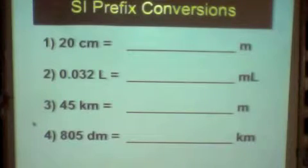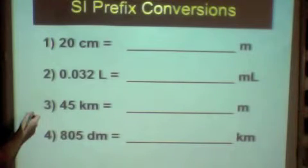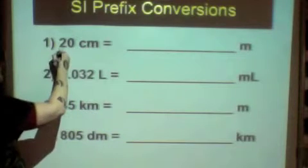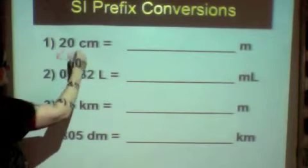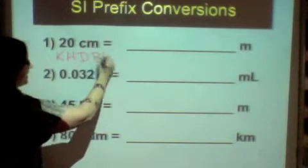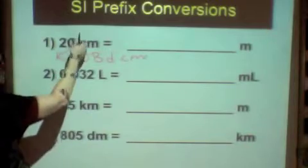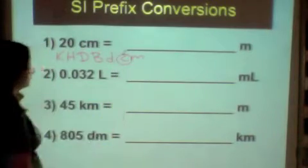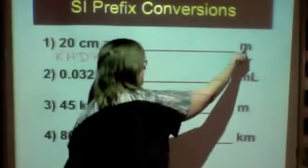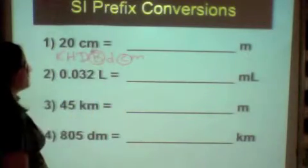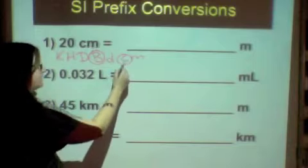Okay? So, we're going to do the first two together and then I'm going to pause the video and do three and four. So, for instance, the first one, we're starting with centimeters. So, King Henry died by drinking chocolate milk. We're starting at the C. So, we're starting here. We're going to M, meaning M by itself, which means we're going to the base.